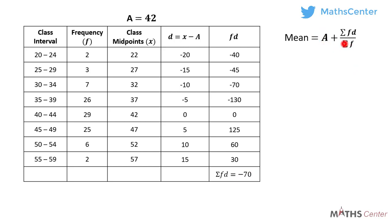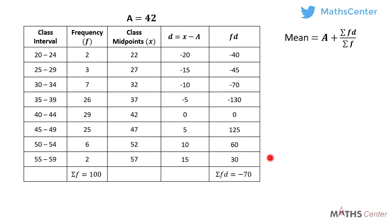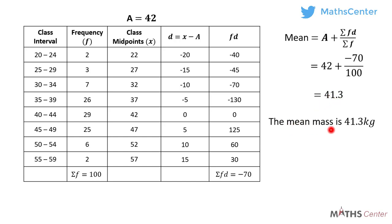From the formula we also need sigma f, so we add all the f values, which gives us 100. We now have the assumed mean as 42, sigma fd as negative 70, and sigma f as 100. So the mean equals 42 plus negative 70 divided by 100, which gives us 41.3. The mean mass is therefore 41.3 kilograms.